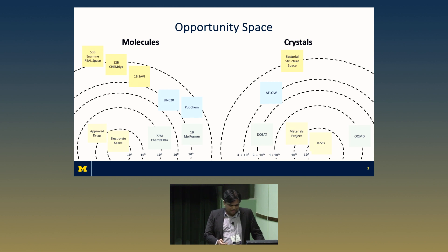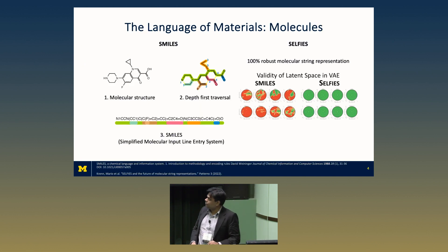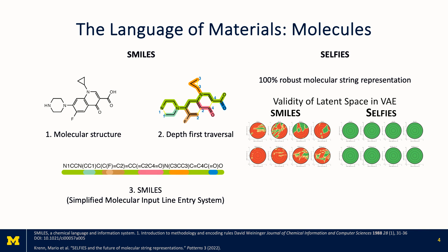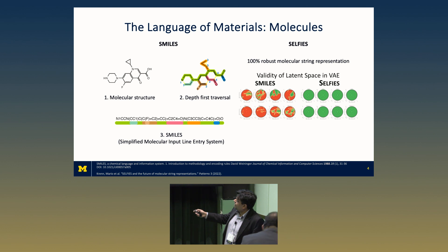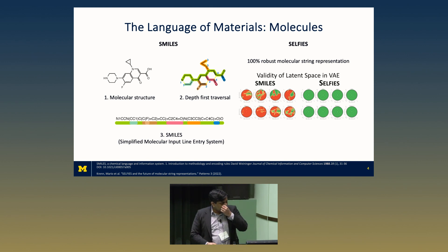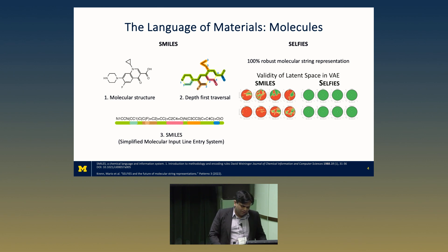I'm going to walk you through how to think about the language of molecules and materials. The history of language for molecules is very rich and very old. This was originally introduced in 1987 — basically the SMILES representation. The idea is that you drop all the hydrogens and then have a language that describes the connectivity — for example, NCCN — then it does branching, continues, does the next branch, and so on. SMILES is a natural way in which molecules have been represented for a very long time. There's now a modern variant called SELFIES, which is a more robust representation.